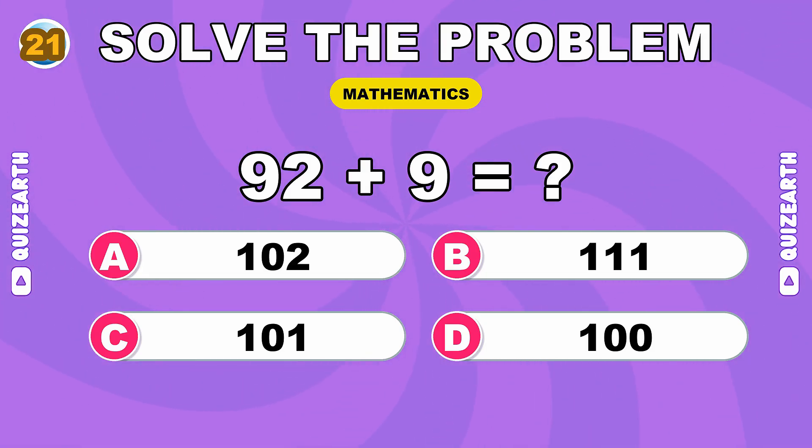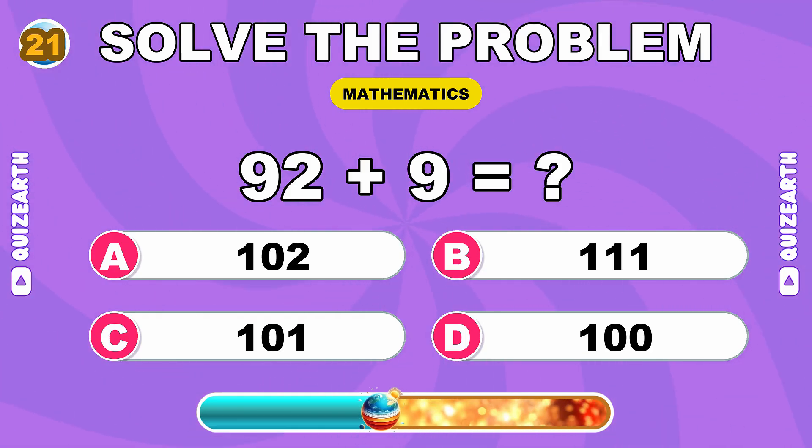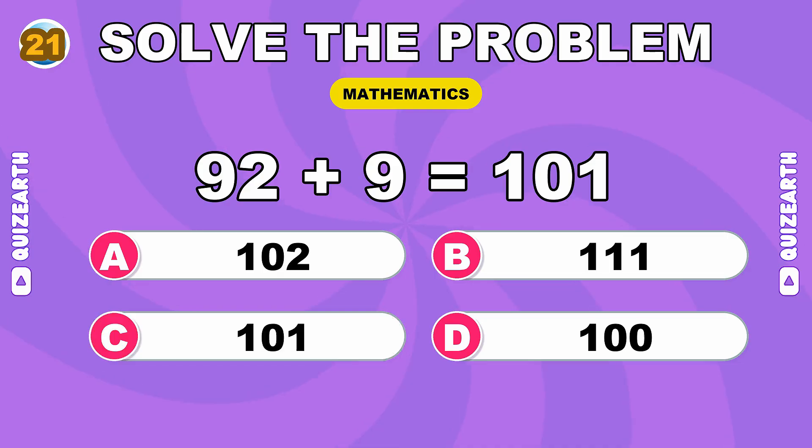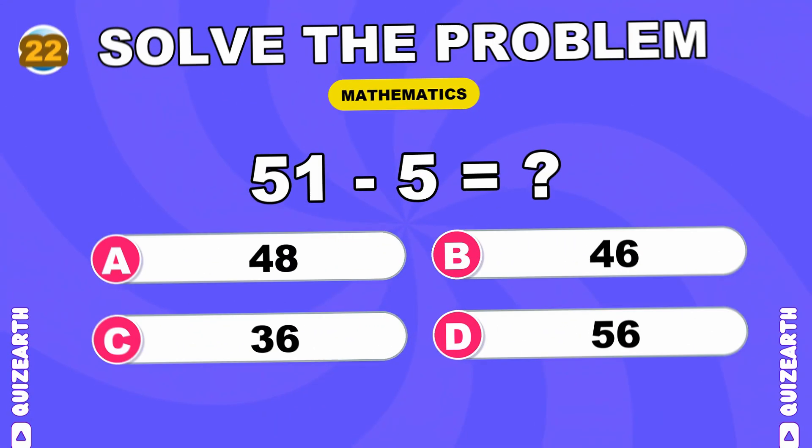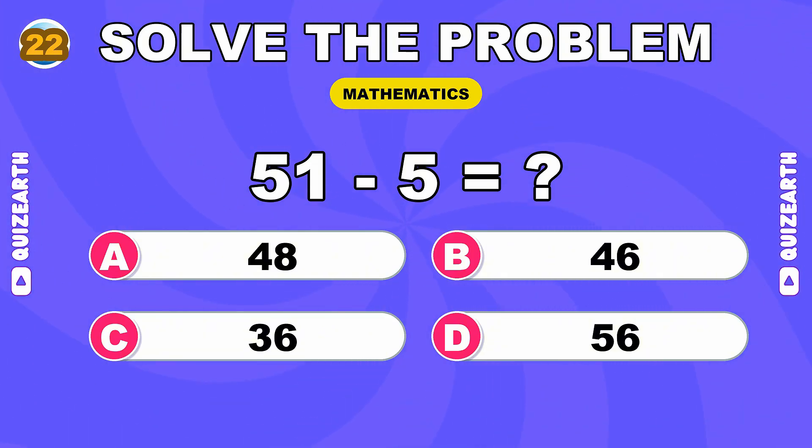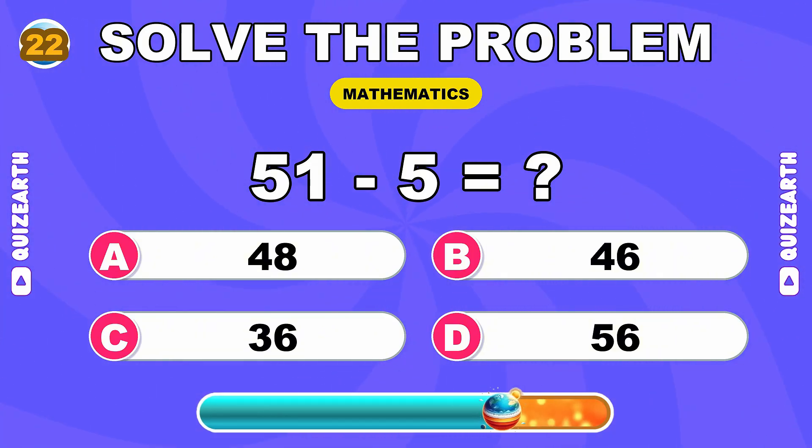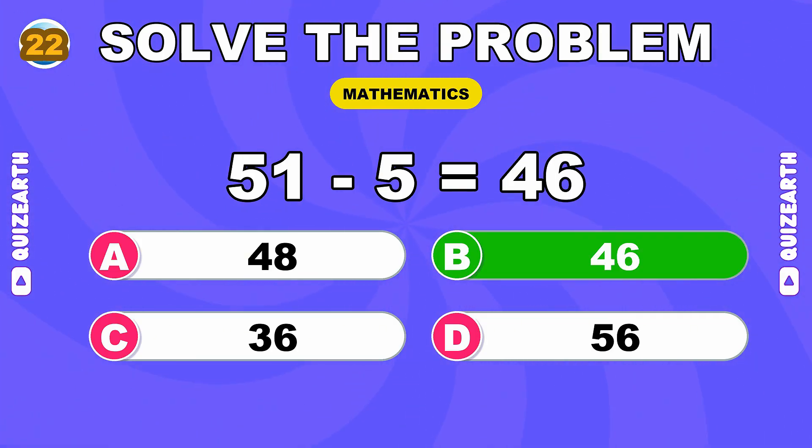What do you get when you add 92 and 9? Flawless execution, 101. What is 51 minus 5? You're dominating, 46.